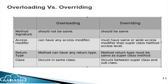Overloading and overriding are confusing concepts, so let me compare them. Method signature: in overloading it does not need to be the same, but in overriding it must be the same. Access modifier: overloading can have any access modifier, but overriding must have the same or wider access modifier than the superclass method. Return type: overloading can have any return type, but overriding must match the superclass method return type. Overloading occurs in the same class, while overriding occurs between superclass and subclass.